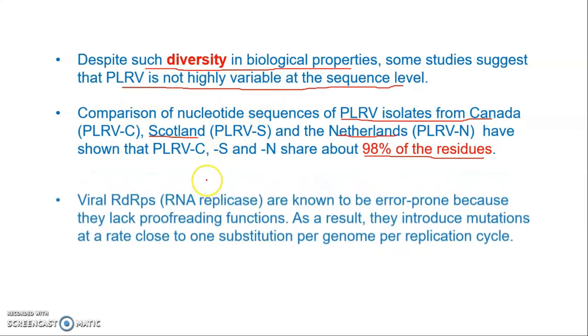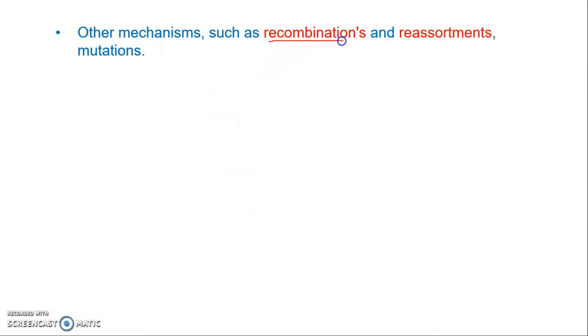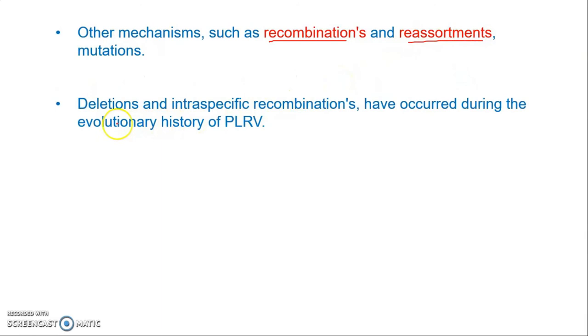Some variability does occur because the RdRp replicase is error-prone and lacks proofreading function, resulting in approximately one substitution per genome per replication cycle. Other mechanisms contributing to diversity in PLRV include recombination, reassortment, mutations, deletions, and intraspecific recombinations.